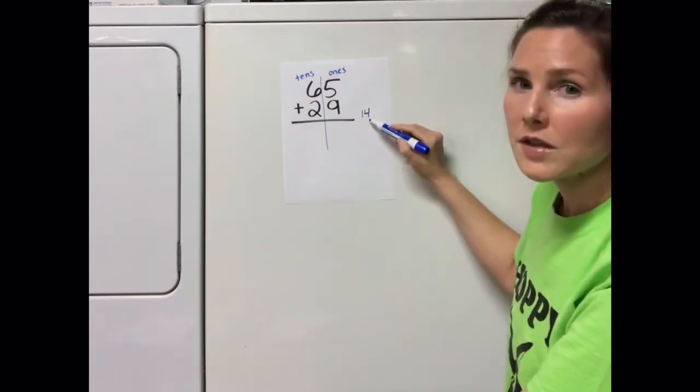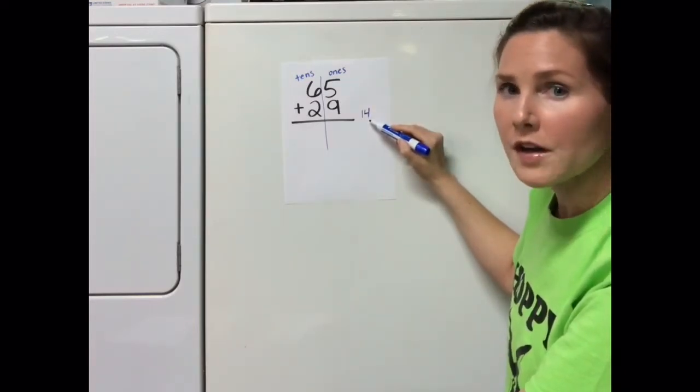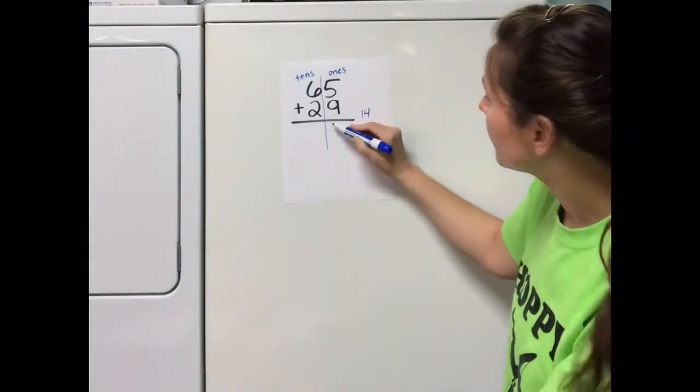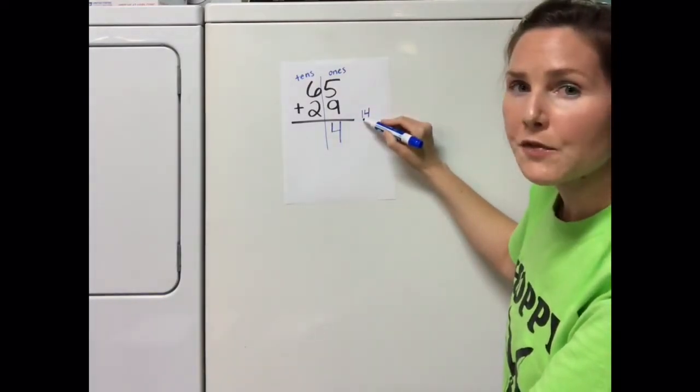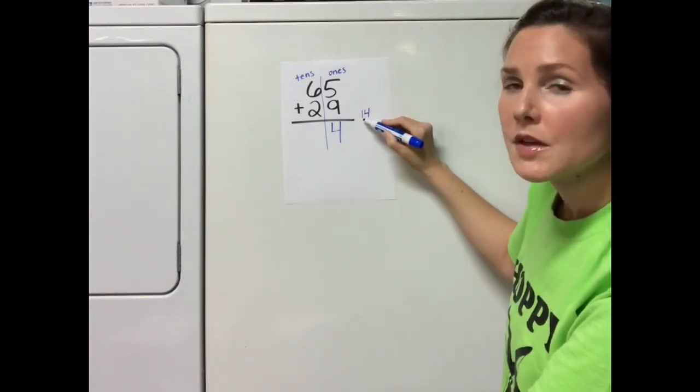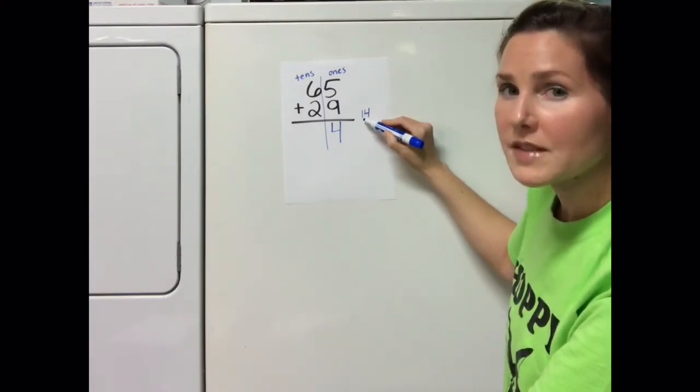The 4 is in the ones column, so I'm going to write the 4 in the ones column. The 1 in the number 14 is in the tens column, so I'm going to write that 1 on top of the tens column.